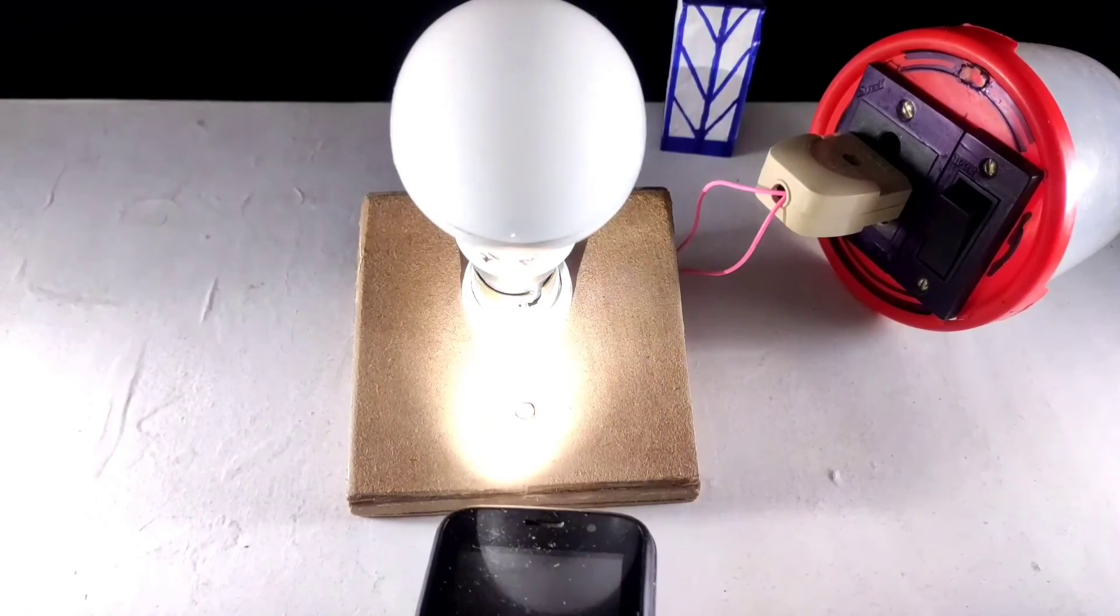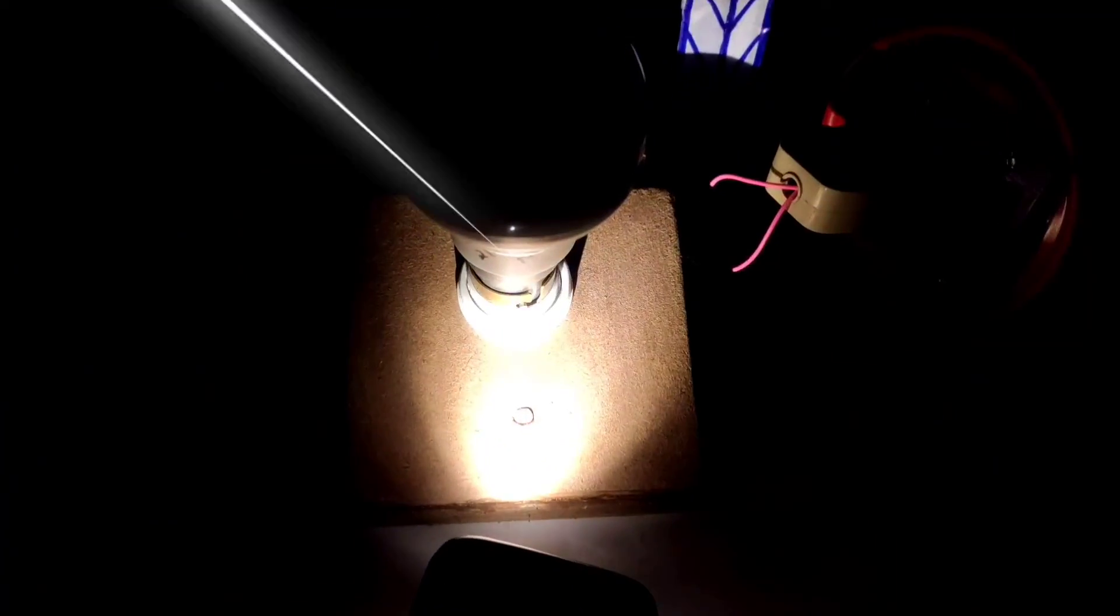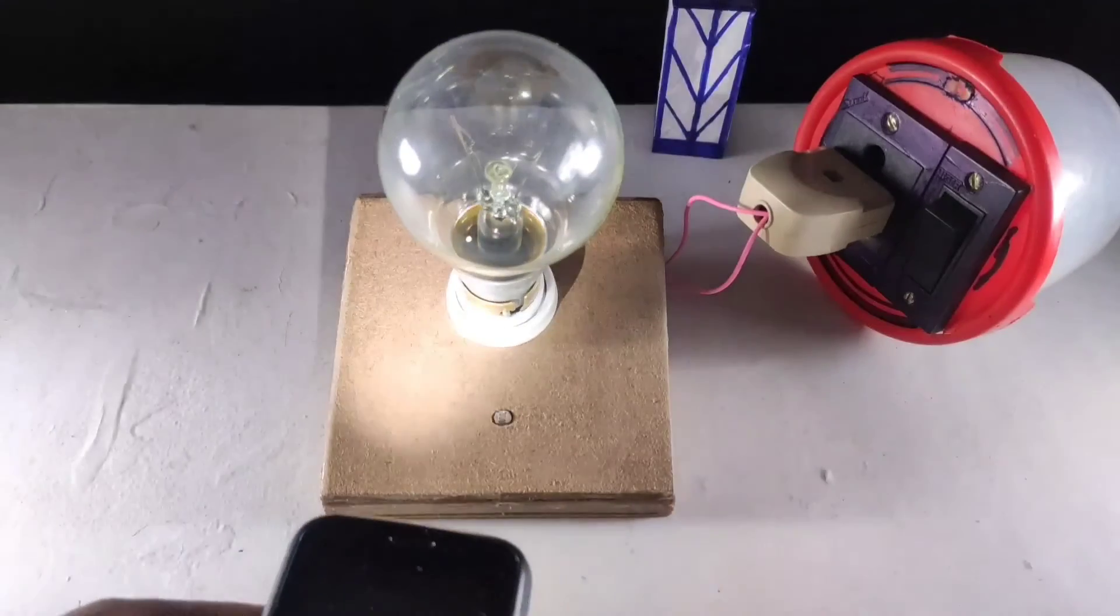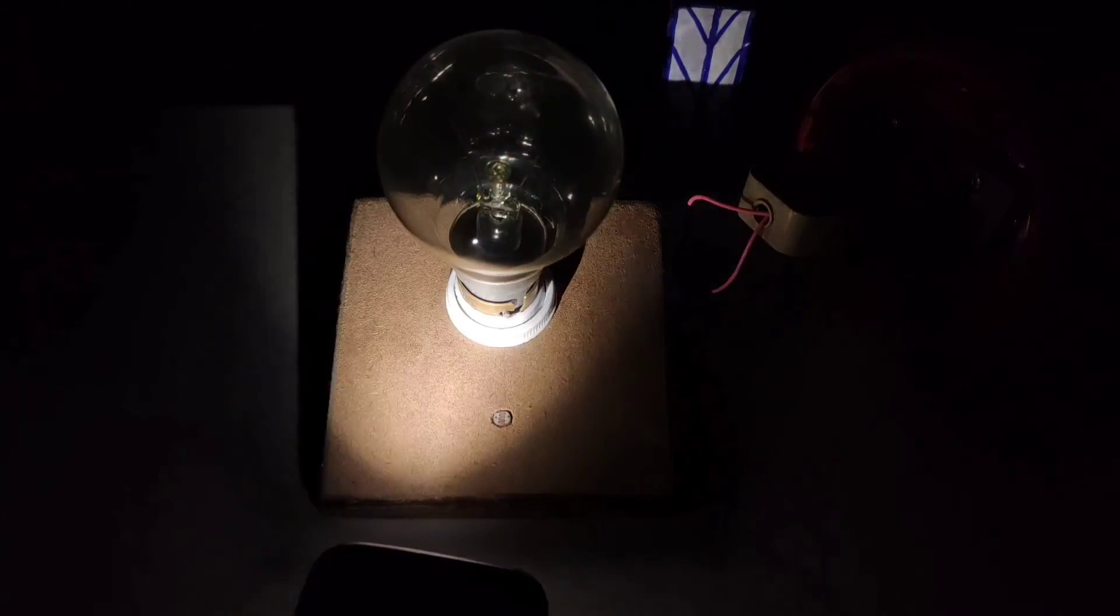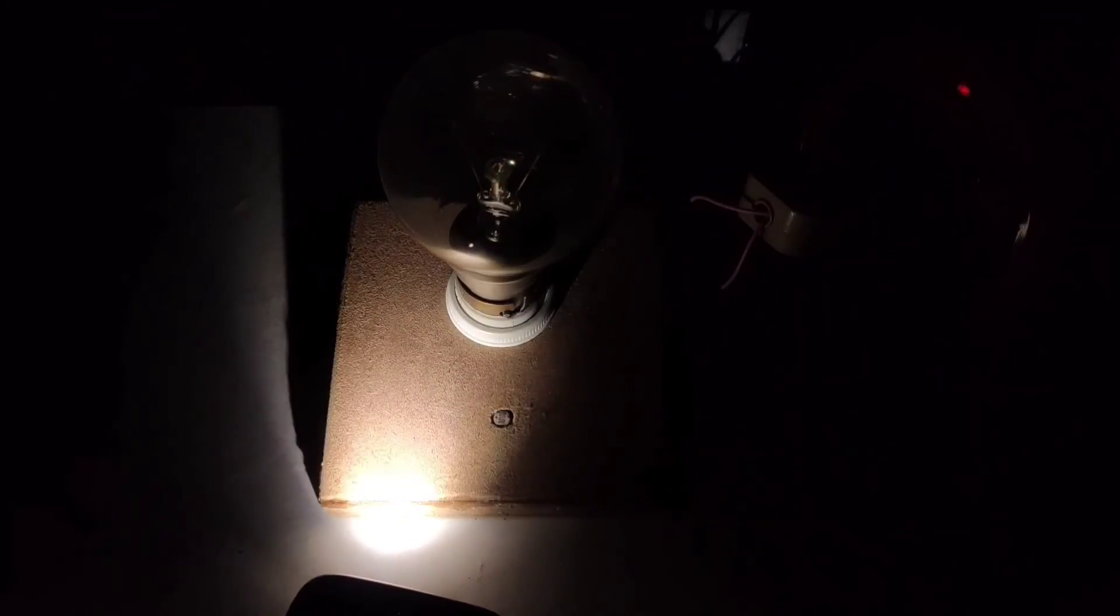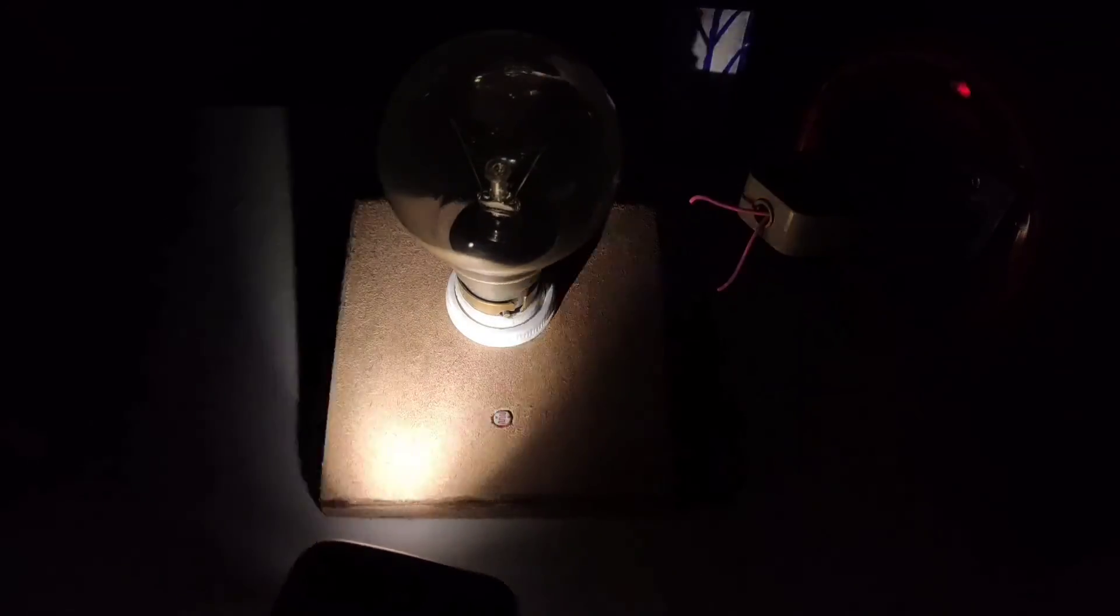I will use a phone light and focus on the LDR. I will turn off all the lights in the studio. Then see, if the light is removed from the top of the LDR, the bulb is lit. If you put the light on the LDR again, the bulb goes out. I ended this video here.